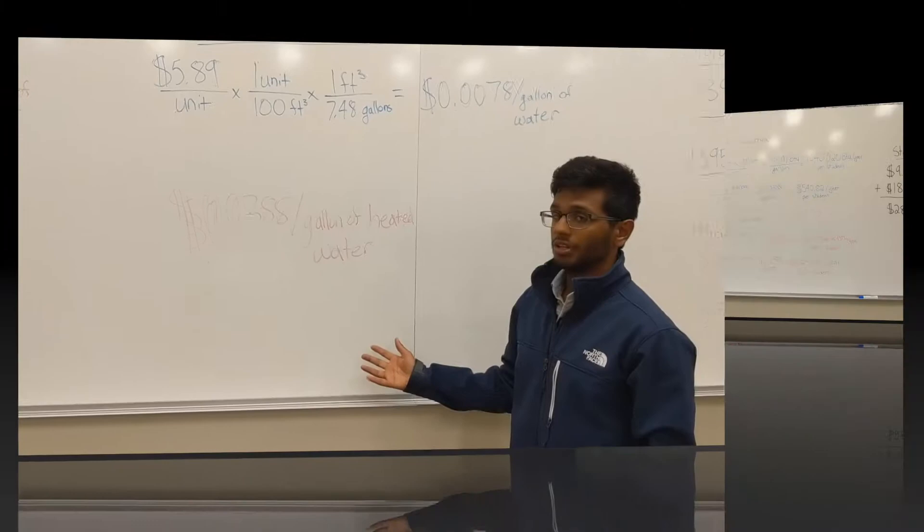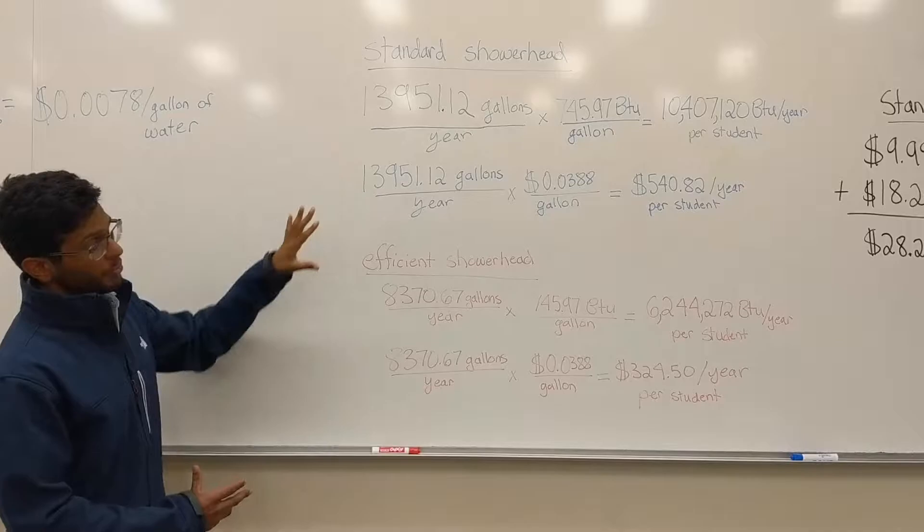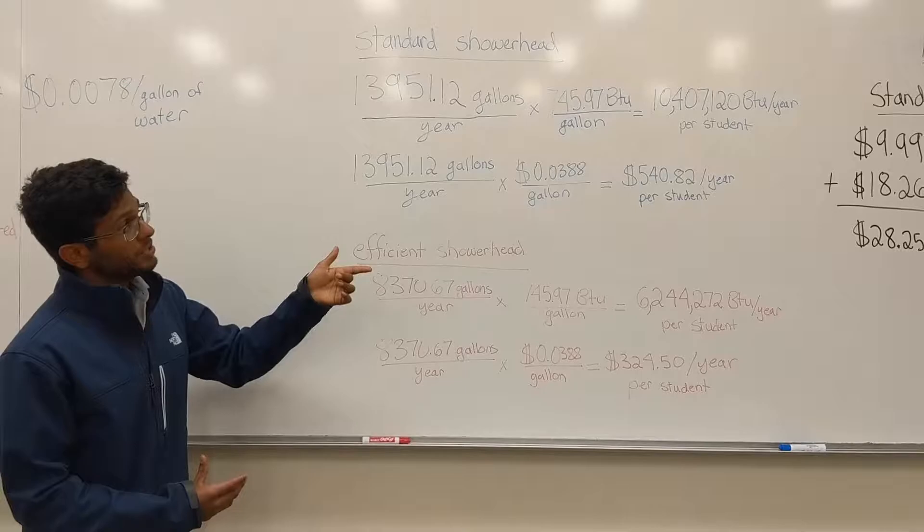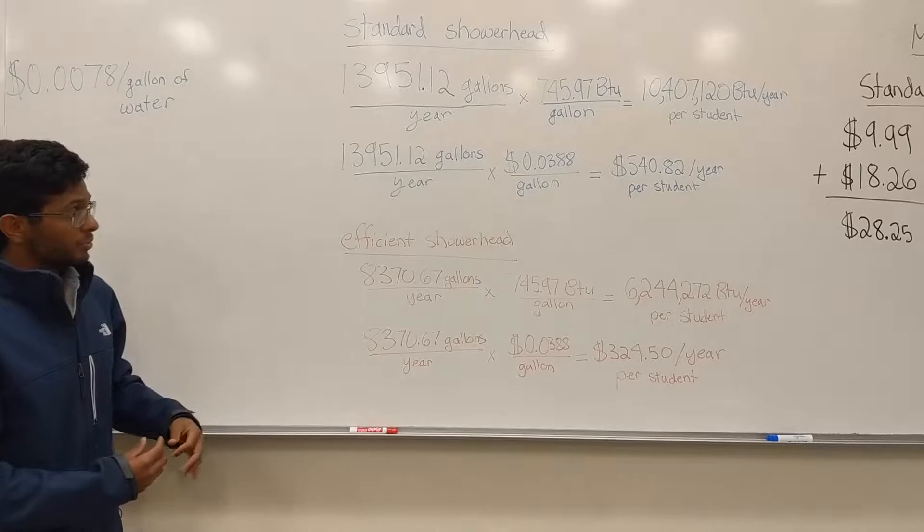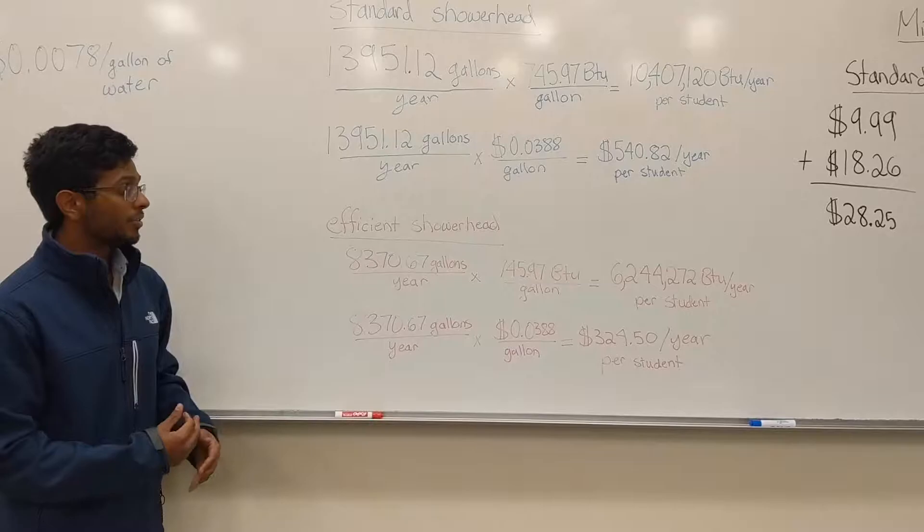So if we multiply the amount of energy to heat up 1 gallon of water and the cost for 1 gallon of heated water per year by the amount of gallons one student uses in a year, we can calculate our upstream cost totals, which are 10.4 million BTUs per year and $541 per year. Now we will repeat the same process with the efficient shower head, and we have different upstream cost totals, which are 6.2 million BTUs per year and roughly $325 per year.